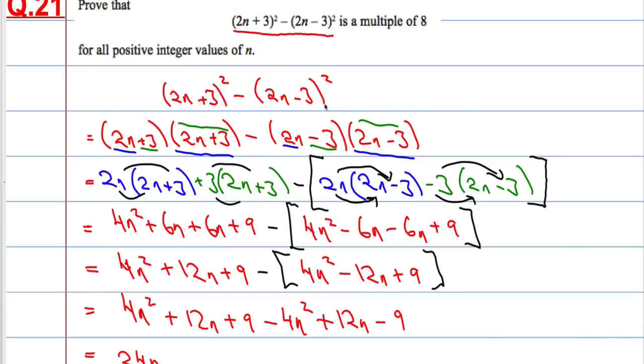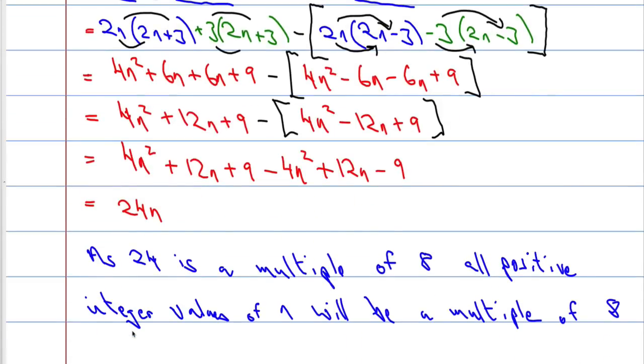So what we had to begin with, once we simplified it down, we end up with 24n. And because 24n is a multiple of 8, that means any value of n will be a multiple of 8 also.